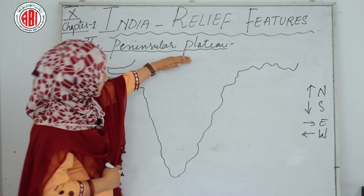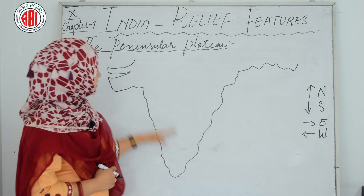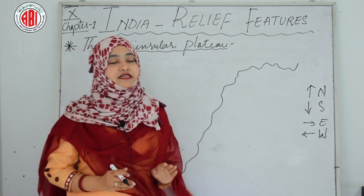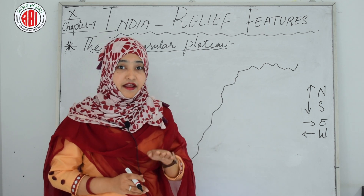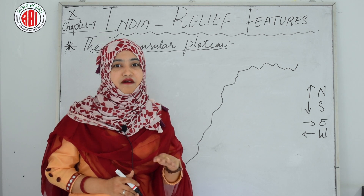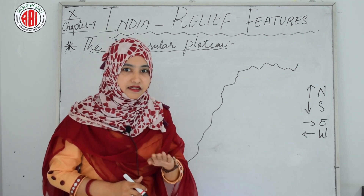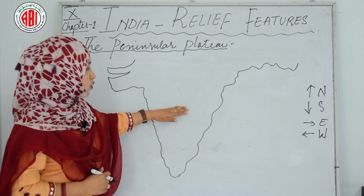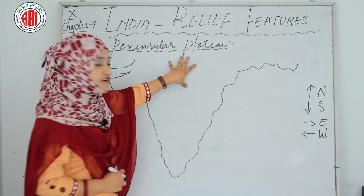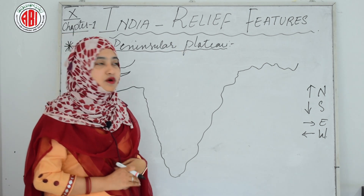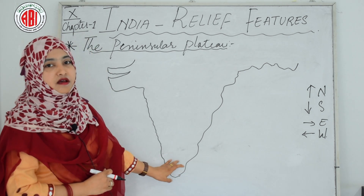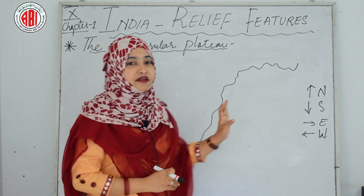The plateau is divided into two parts from start to end. The Malwa Plateau lies over the Deccan plateau on the northern side, and after the Malwa Plateau the Deccan Plateau starts, ending at the southernmost tip — Kanyakumari.